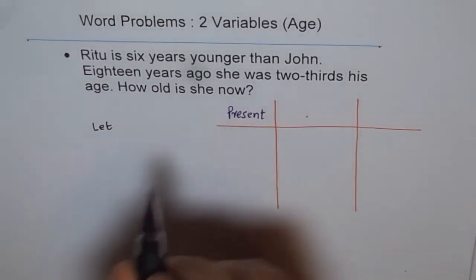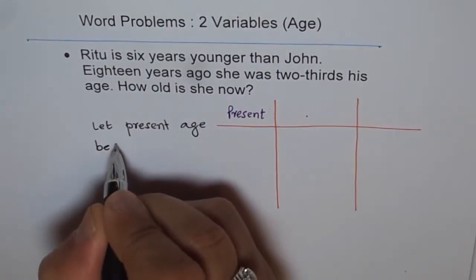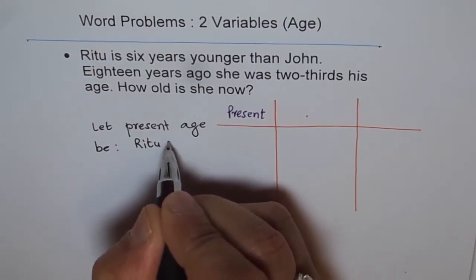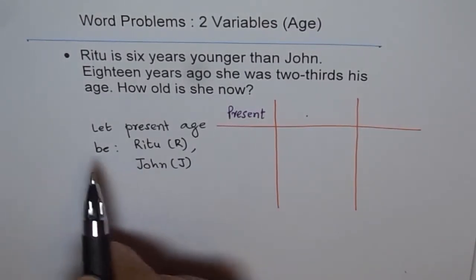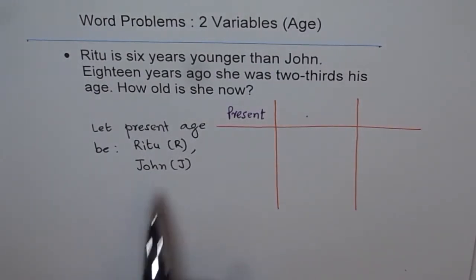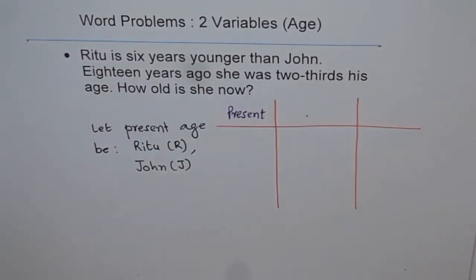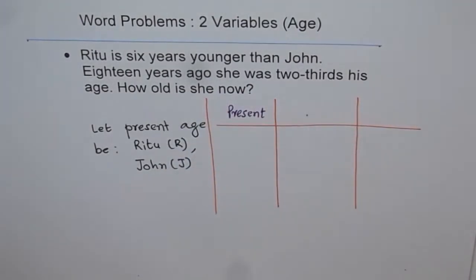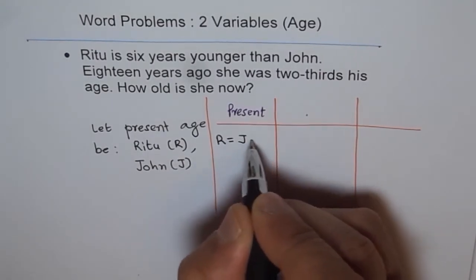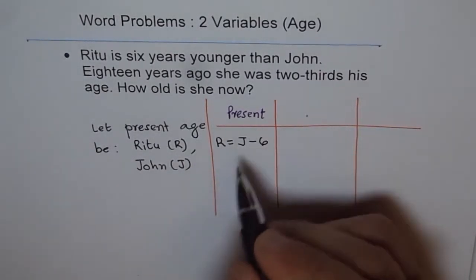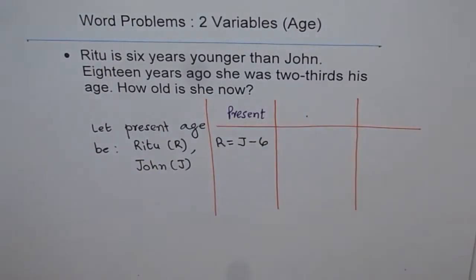Let the present age of Ritu be R and of John be J. Now for the present condition: Ritu is six years younger than John, which means R = J − 6. That is our first equation for the present condition. The second condition is 18 years ago, she was two-thirds his age.